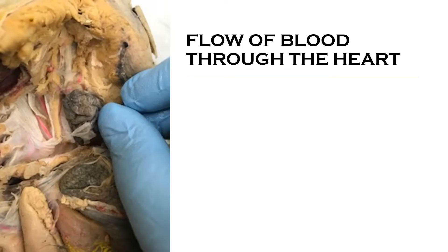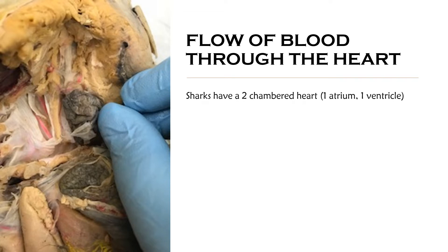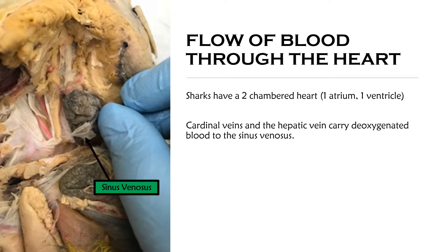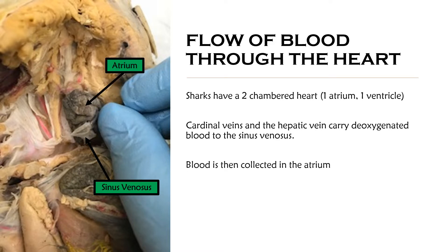We're going to begin with the flow of blood through the shark heart. Sharks have a two-chambered heart, so they have one atrium and one ventricle. The cardinal veins and the hepatic vein carry deoxygenated blood to the sinus venosus, which is the opaque bag sitting posterior to the atrium. That blood is then collected in the atrium.